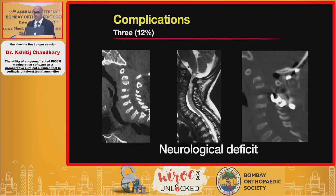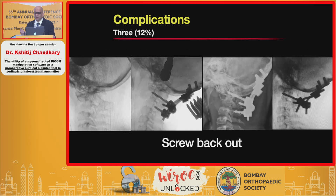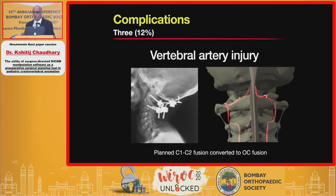There were three complications overall. The first child had Morquio syndrome with extremely small dysplastic bones; two C2 laminar screws were attempted but cut out on the table, hooks were used but migrated into the spinal canal causing quadriplegia. The second complication was back-out of a C3 lateral mass screw in the acute post-operative period; the patient was taken back to the OR and revised with eventual good outcome. The third was a vertebral artery injury, fortunately without any negative consequence.